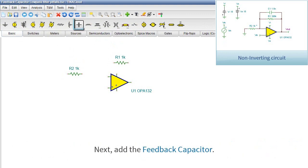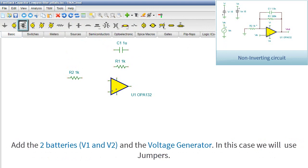Next, add the feedback capacitor. Add the two batteries, V1 and V2, and the voltage generator. In this case, we will use jumpers.